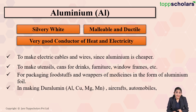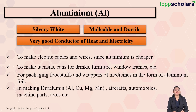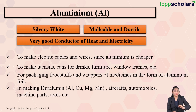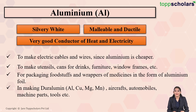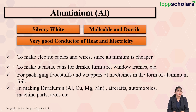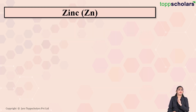If aluminium is mixed with small proportions of copper, magnesium, and manganese, it results in the formation of an alloy called duralumin. Duralumin is used for making bodies of aircraft, automobiles, machine parts, and some tools.